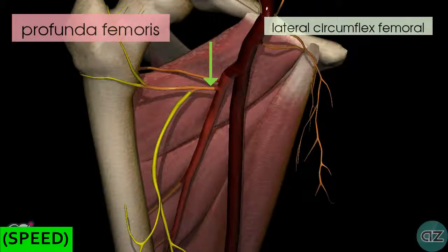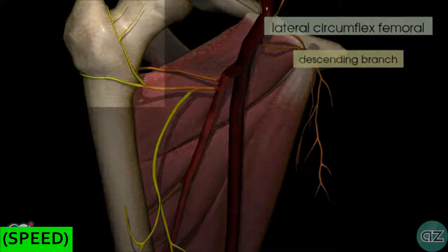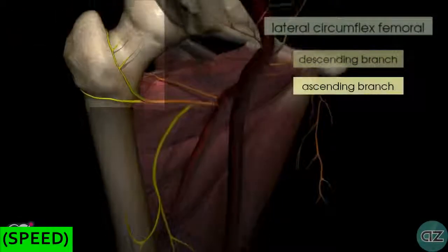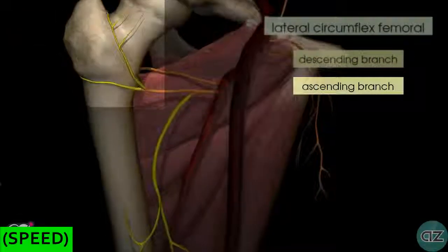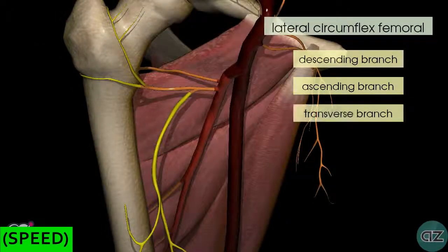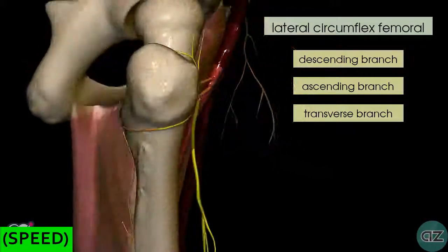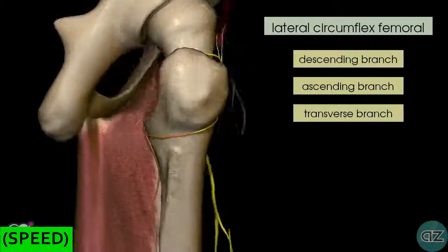The lateral circumflex artery has three branches. The first one you can see here is the descending branch, and then coming up to the shaft of the femur you've got two branches: one ascends up onto the neck of the femur, and the other one is called the transverse branch, which winds around laterally around the proximal shaft of the femur as you can see here.